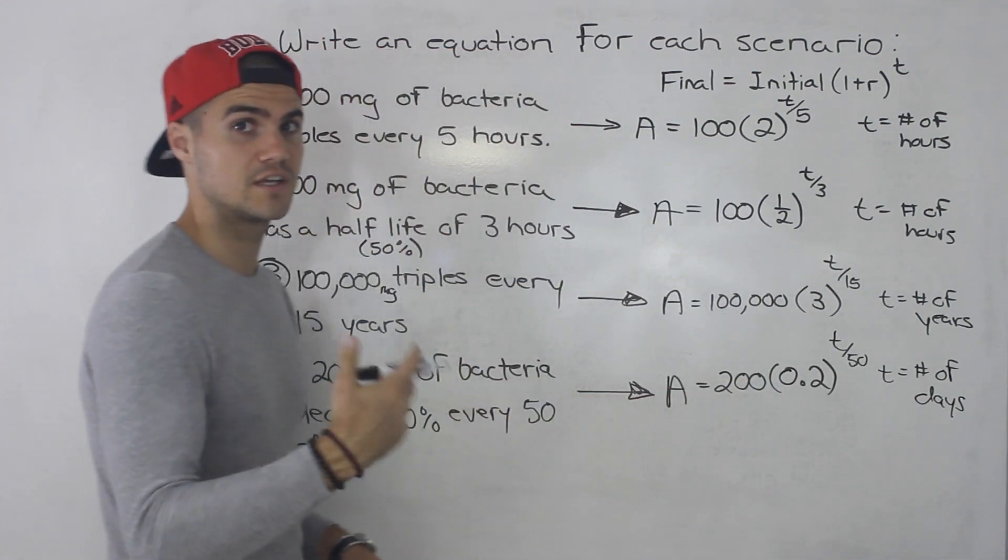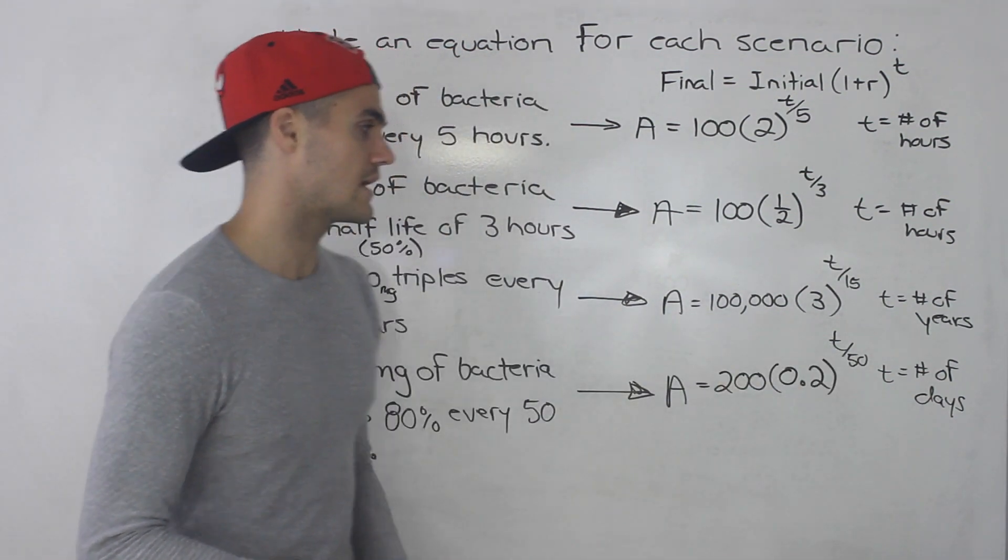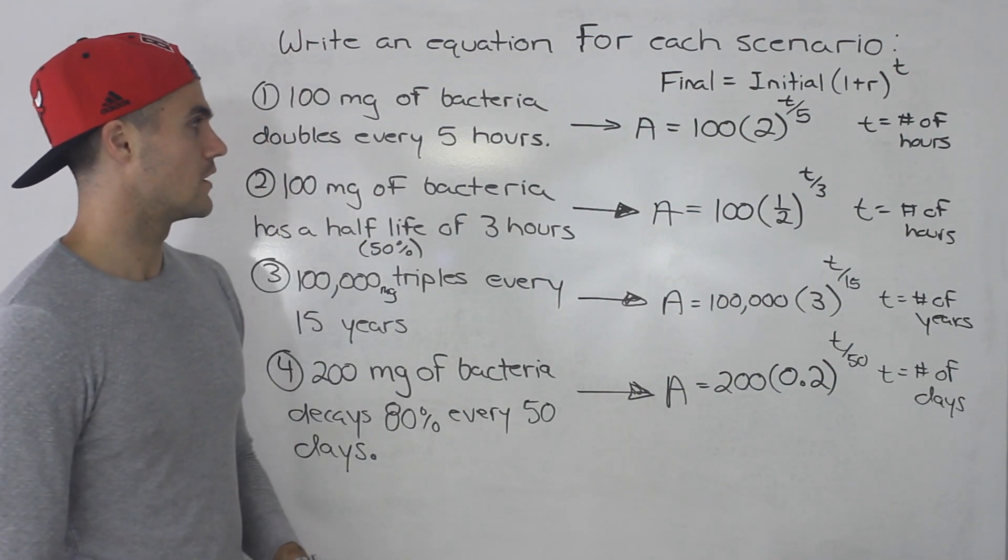If we let t be the number of 50 day periods, it would just be an exponent t. But since we're letting it be the number of days, it'd be t over 50.